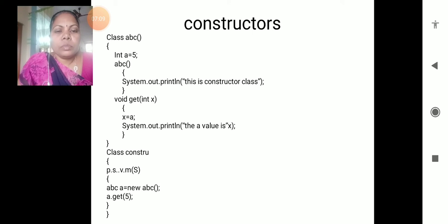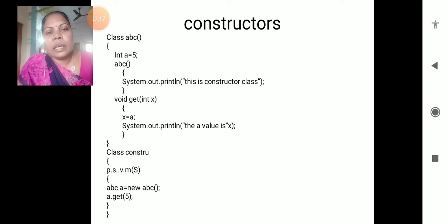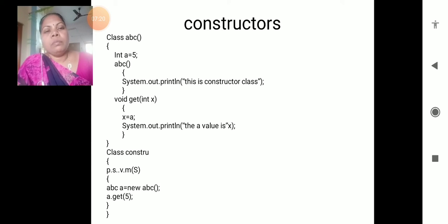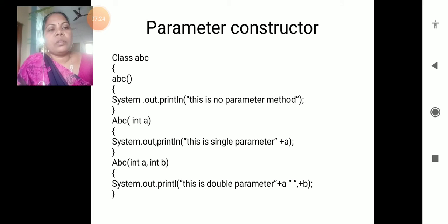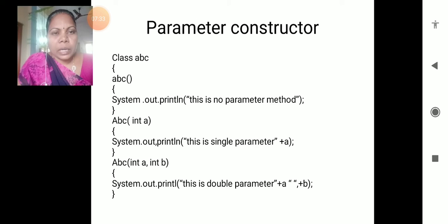Students should remember: when you are constructing the constructor, the class name and method name must both be the same - they should be the same names. That's why you are calling it a constructor. For parameterized constructors: class abc, abc - the constructor name - class name and method name are both the same. abc is the method name.